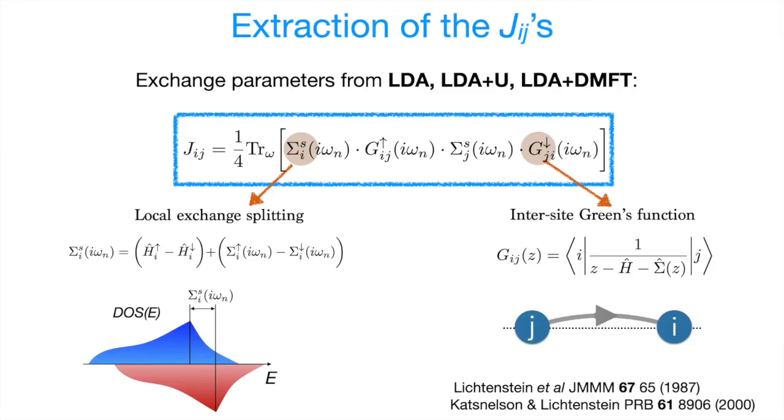And basically, it consists of two terms. We have a local exchange splitting, which is defined as the difference between the projected Hamiltonian up minus local projected Hamiltonian down. Plus, we have a contribution from the self-energy, because as it was shown in the second paper, the approach also holds as long as the self-energy is local. It can be dynamical, like in the case of LDA plus DMFT, or it can be static, as in the case of LDA plus U. You can calculate the center of gravity of spin-up and spin-down states, and the difference will roughly correspond to the average local exchange splitting.